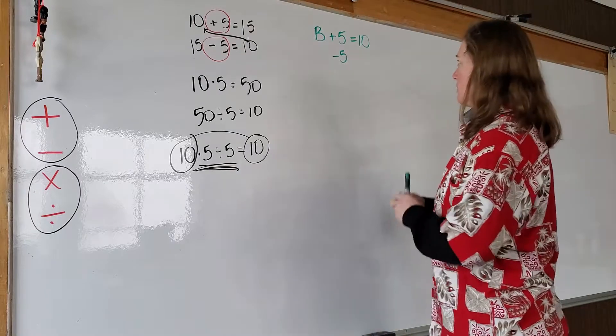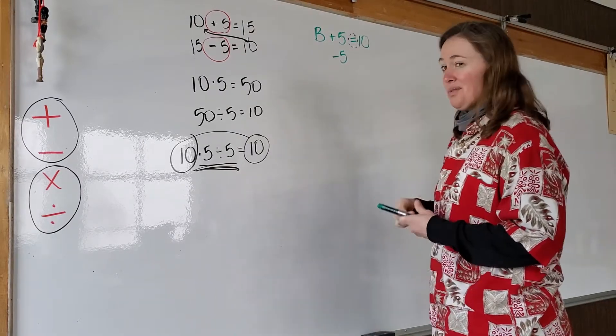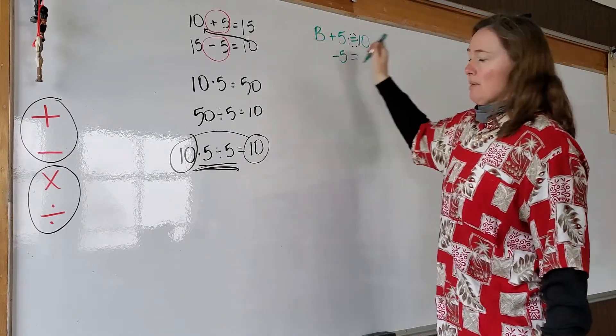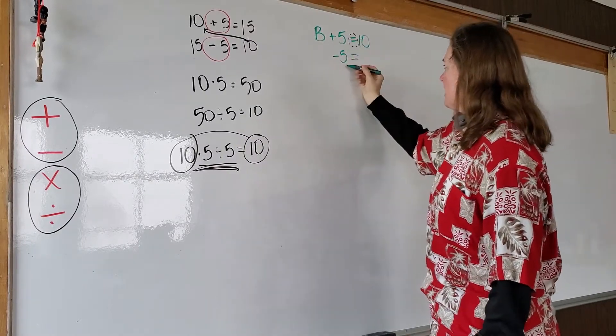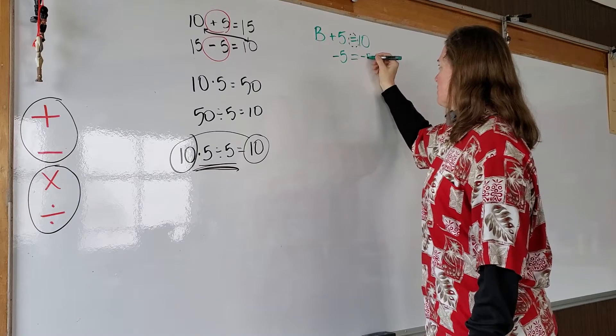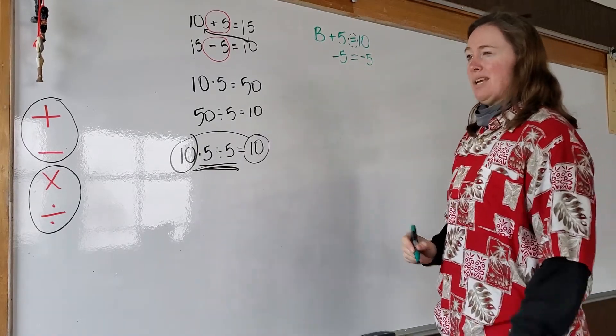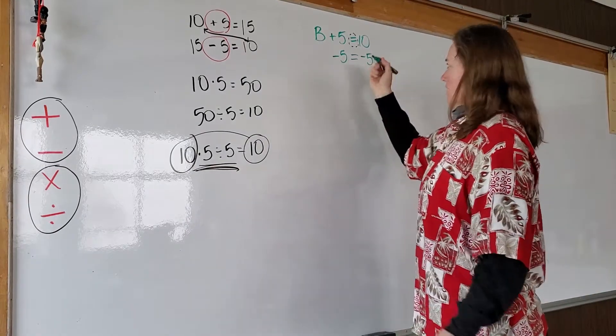Here's the part that we've got to remember. This equal sign, sort of a big deal. What you do to one side of an equation, remember an equation is just a number sentence with an equal sign in it. What you do to one side of the equation, you must do to the other side. Must, must, must. Otherwise, it's not equal. And it has to be equal. It's just like a rule.